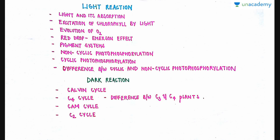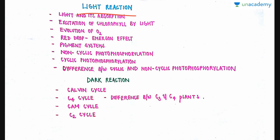In the previous video, I've already talked about light reaction and dark reaction and the various differences between the two — how assimilatory powers in the form of ATP and NADPH2 are formed in light reaction, which are utilized in dark reaction to form glucose and sugars.